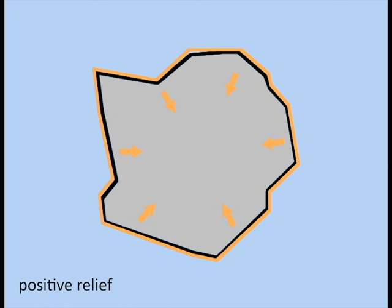it is called a positive relief, and the Becke line moves towards the mineral. If the refractive index is lower, it is a negative relief, and the Becke line moves away from the grains.